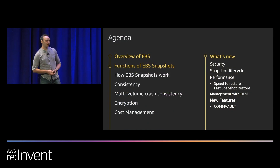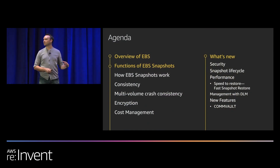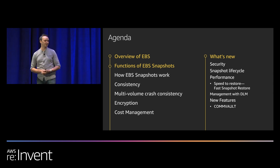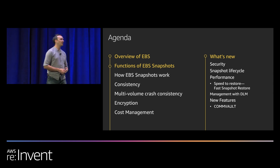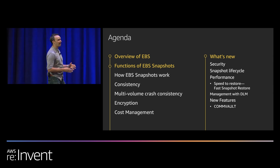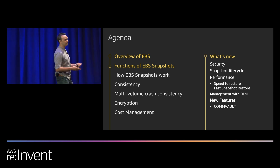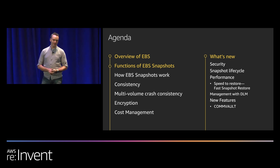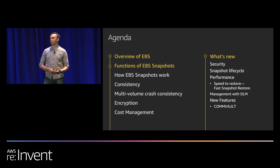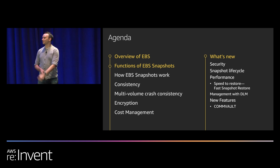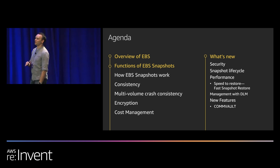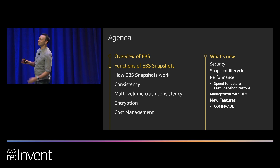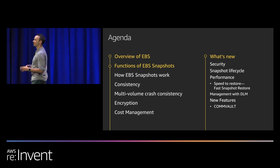In today's session, I'll give a quick overview of AWS EBS and how it fits into the overall storage portfolio. We'll go into Snapshots and the functions they serve, how they differentiate from traditional snapshots in other storage systems, and we'll cover multi-volume, encryption, some new best practices, and new features launched in the last year to make it easier to consume and use Snapshots.